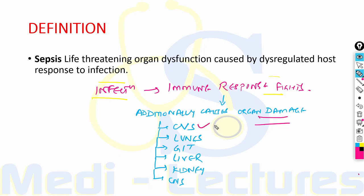CVS leading to diminished myocardial contractility, lungs leading to ARDS, GIT leading to dysmotility, liver leading to increased transaminase levels, kidney leading to AKI, and CNS leading to altered mental status. All these can be used to diagnose sepsis.